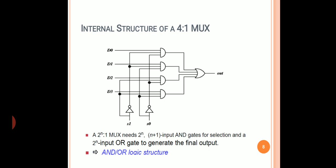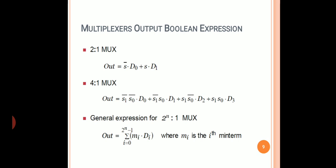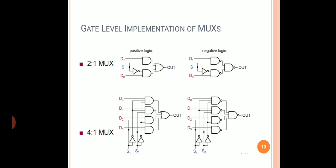Observe carefully when implementing multiplexers: for the inputs we require AND gates, for the select lines we require inverters, and at the output an OR gate is used. The Boolean expression for the 2-to-1 MUX is S' D0 + S D1, and this can be generalized. In gate-level implementation using positive logic an AND-OR structure is used, and in negative logic a NAND-NAND structure is used.